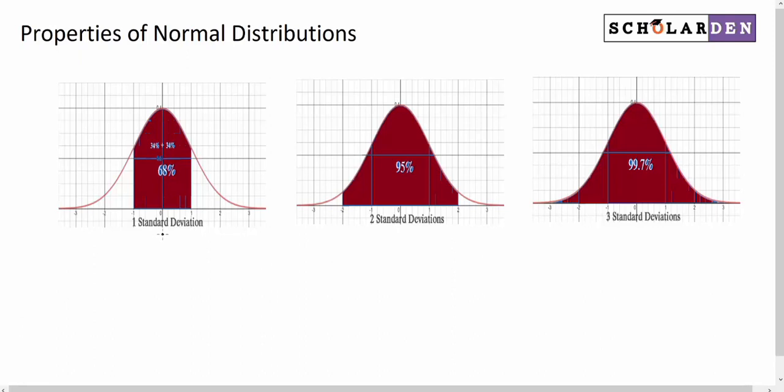So the midpoint of a normal distribution is going to be the mean, and that's the same number as the median and the mode. Other types of distributions, those three can be different. In a normal distribution they're the same.